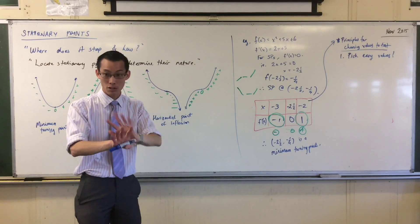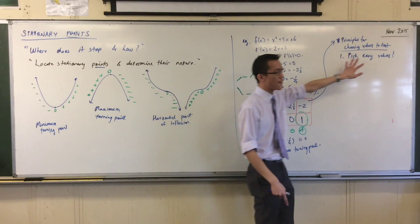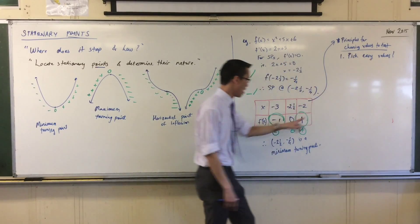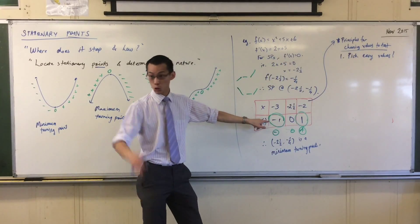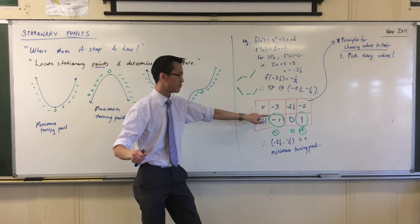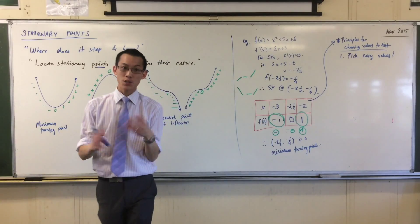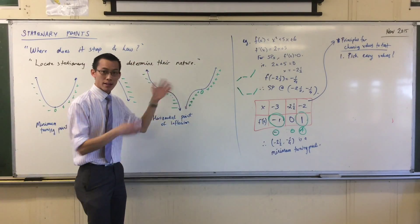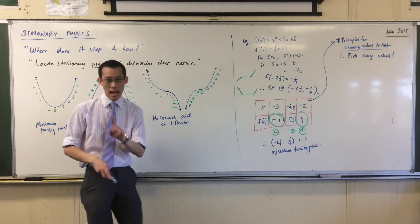So you want to pick values that make the evaluation of this number, because you need a number, you want to pick them so they're easy. So that's the first thing. Negative 2 and negative 3, they fall into that category. However, secondly...